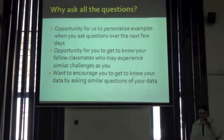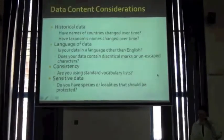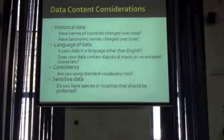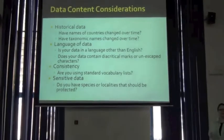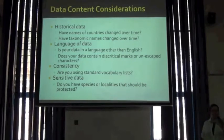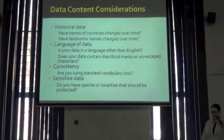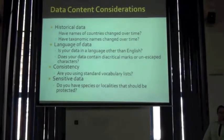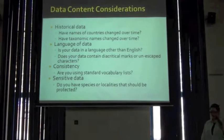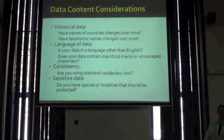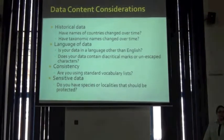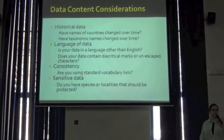Now I'm going to move into the data content considerations. Some things you should be considering in your data as we start to move into the assessments this afternoon — Javier and Kyle have a bunch of exercises they'll take you through. We already talked about historical data. You might want to consider: have the names of countries changed over time? Have your taxonomic names changed over time? Is your data in a language other than English, or does it contain diacritical marks or accent marks? If you have anything like that, it's going to require encodings for your data — John talked about UTF-8 in his presentation.